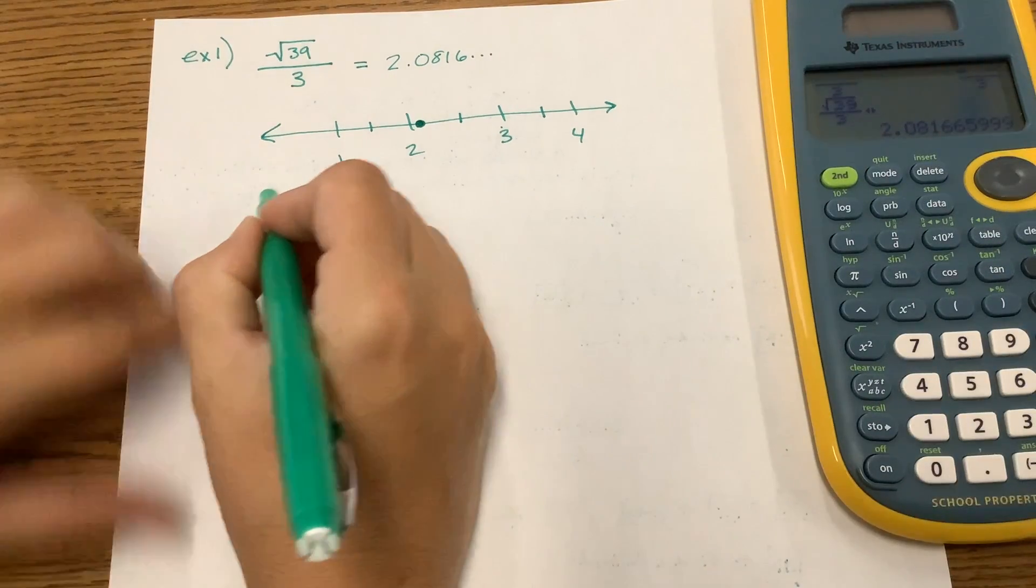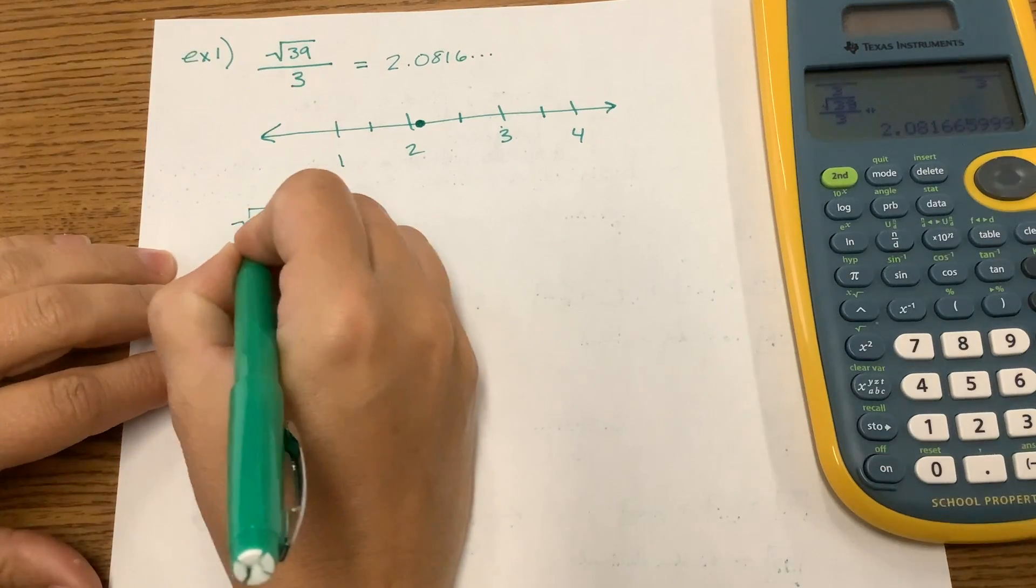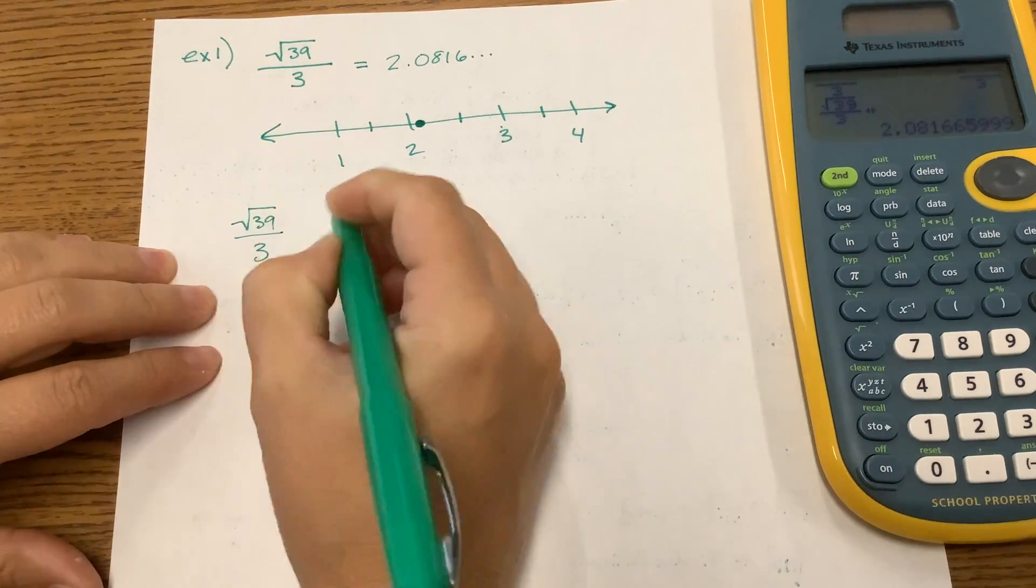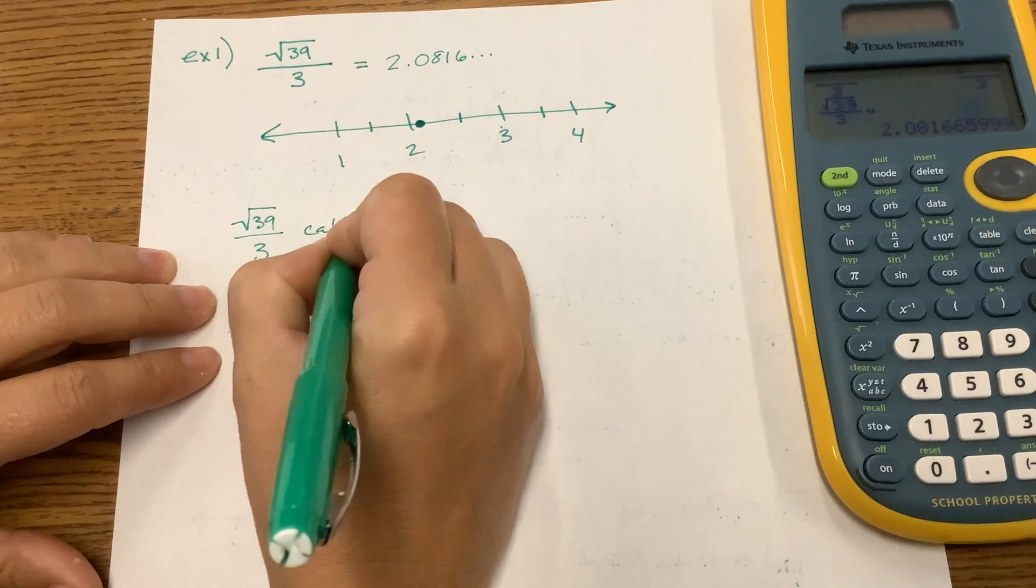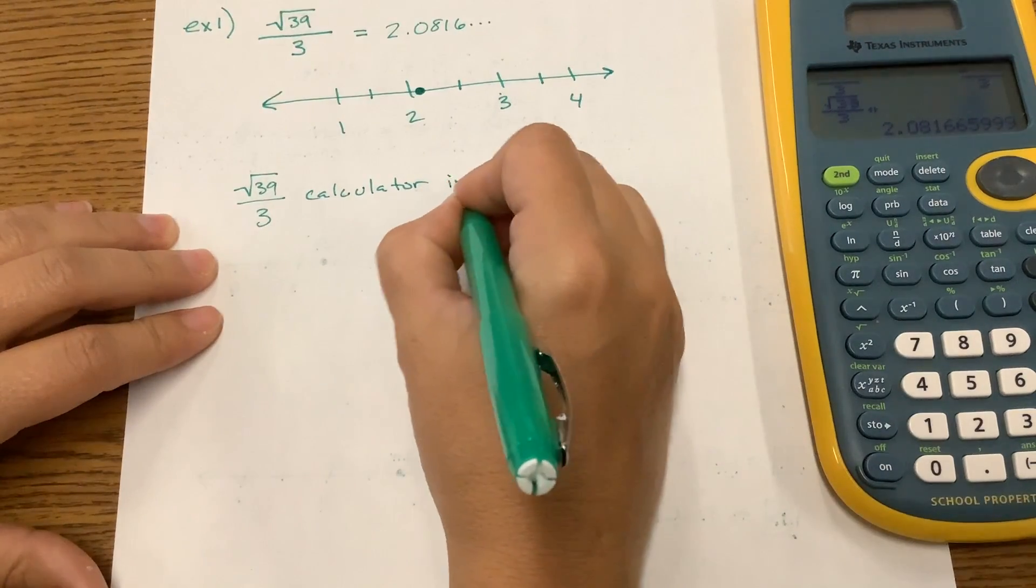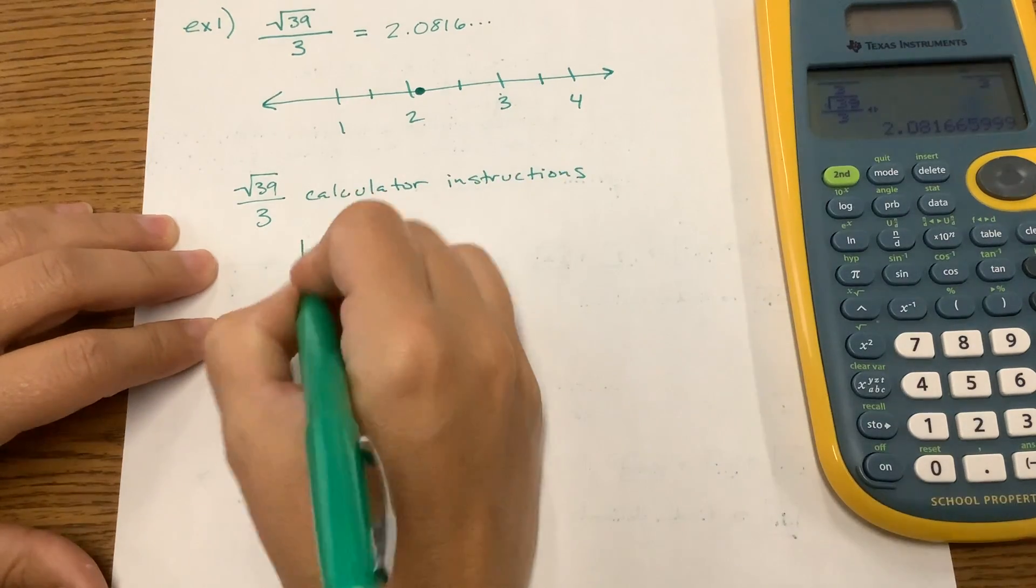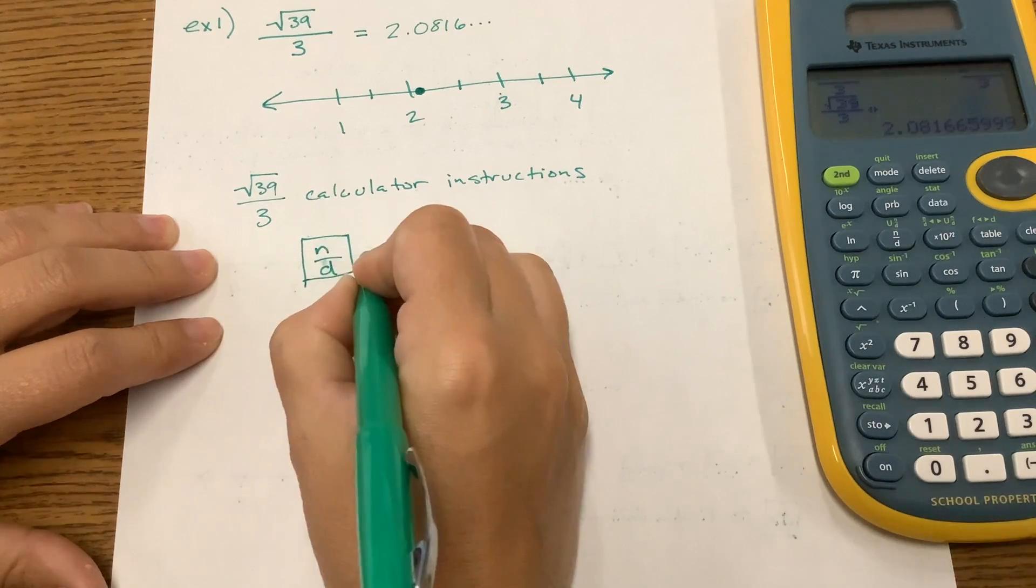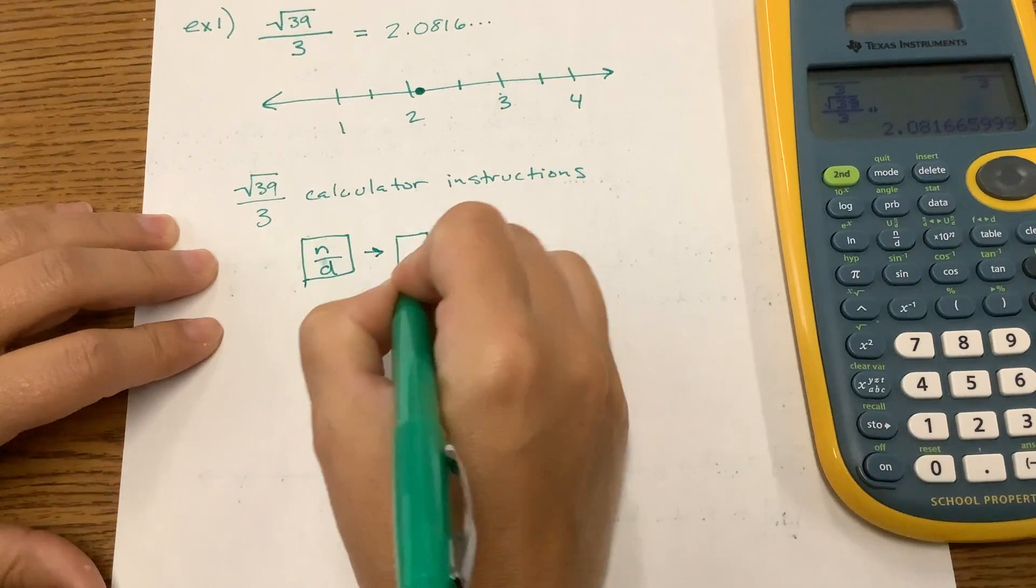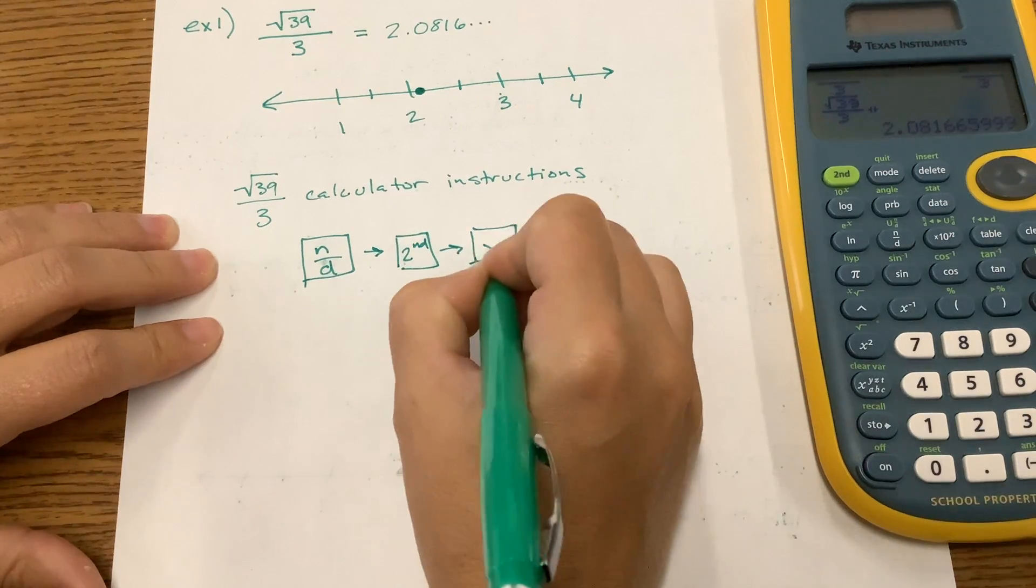As a note, we're going to put how we got the square root of 39 over 3 in our calculator. So we did the fraction button first, then we pressed second, then we pressed x squared.